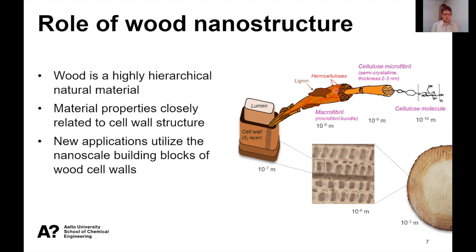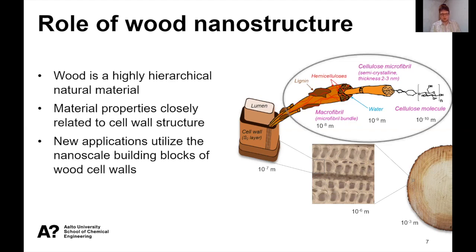These microfibrils are aggregated together into bundles, separated by hemicelluloses, and water is also included in the structure. Lignin is another component included in the cell wall. The material properties of wood are really closely related to the structures at this nanoscale, especially due to the orientation. In the new applications of wood — preparation of nanomaterials and so on — this level of structure is highly important, and this is where we will concentrate today.